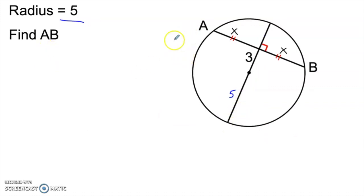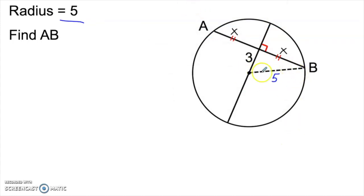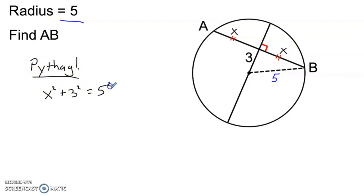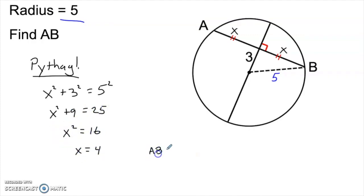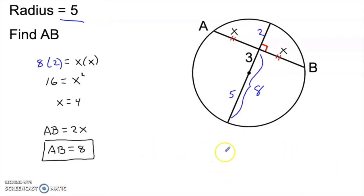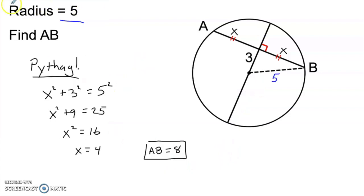Here's another way to tackle the same problem. Still using the fact that the chord is bisected, instead of using the other piece of the diameter, I add a radius from the center to point B. That radius is also 5. Now I have a right triangle with hypotenuse 5, one leg 3, and missing leg x. Using Pythagoras: x² + 3² = 5², so x² + 9 = 25, x² = 16, and x = 4. That means AB = 8, just like before. Either method works — adding the radius and using Pythag may feel more straightforward.